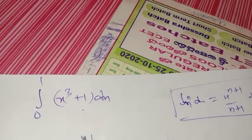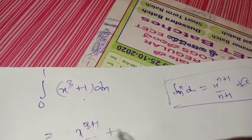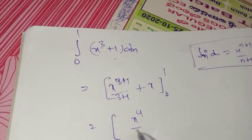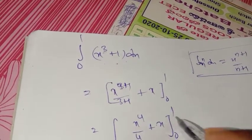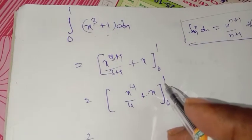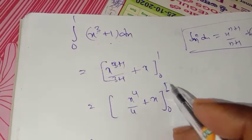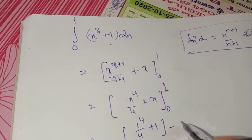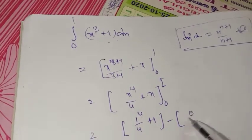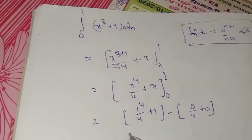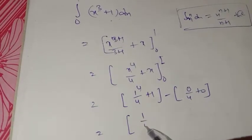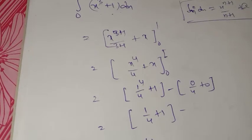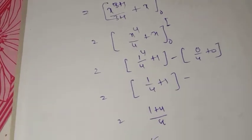That equals x to the power of 4 by 4, plus ∫1 dx equals x, with limits 0 to 1. Substituting the upper limit: 1 to the power of 4 by 4 plus 1. Substituting the lower limit: 0 by 4 plus 0. That equals 1/4 plus 1, taking LCM 4, that is 1 plus 4 by 4 equal to 5/4.